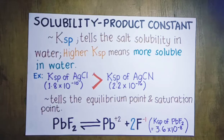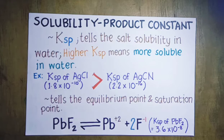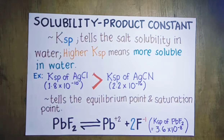Good day. For today, we are going to talk about the solubility product constant. The solubility product constant, which is symbolized as Ksp, is a numerical value which tells us the extent to which a salt or any ionic compound will dissolve or dissociate in water. It is like the dissociation constant for acid or the dissociation constant for base, but this one is the dissociation constant for salts or any ionic compounds.